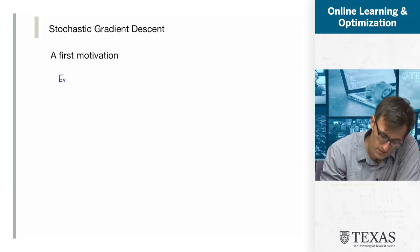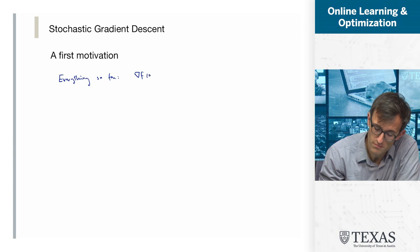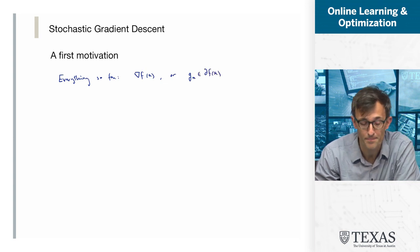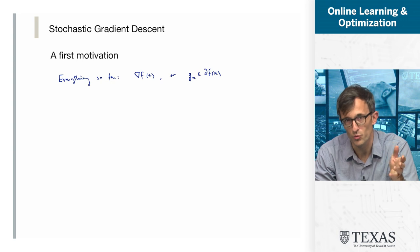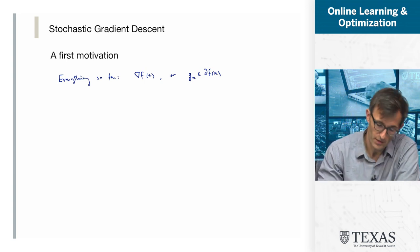Welcome back. Today we're going to start talking about a really important topic: stochastic gradient descent. So what is this about and where does the motivation come from? So far, everything we've been doing has depended on using exact evaluations of gradients or subgradients. The setting we want to switch to now is when, for a variety of reasons, we don't want to use the exact gradient but rather a noisy version of it.